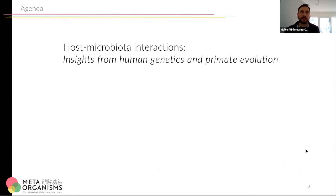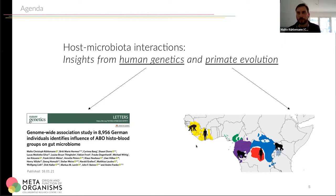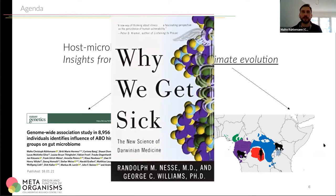Coming back to my title — Insights from Human Genetics and Primate Evolution — on one hand I will briefly talk about a recent study where we performed a microbiome GWAS, a genome-wide association study to look at microbiome traits in humans, but also about primate evolution, which I will talk about a little longer today. The general framework of my work is the idea of evolutionary medicine or Darwinian medicine — thinking more about the reasons why people get sick from an evolutionary perspective, looking not only at proximal explanations but also the whole human and even pre-human development.